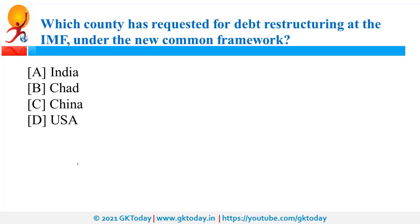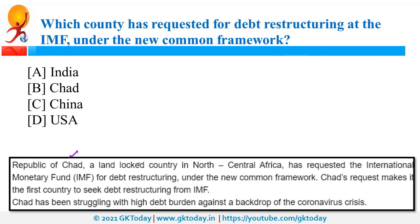Chad — the Republic of Chad, a landlocked country in North Central Africa — has requested debt restructuring at the IMF under the new Common Framework. Debt restructuring means you are unable to repay your debt, so you request a change in the terms and conditions. For example, if the interest rate was 5% and repayment was due in 2 years, you might request 5 years instead — paying more interest overall due to the extended timeline. Chad has requested this because it is facing economic problems due to coronavirus.